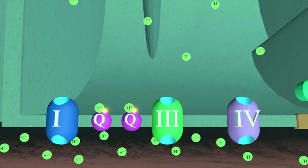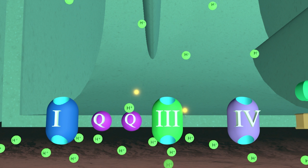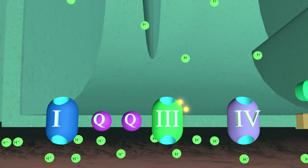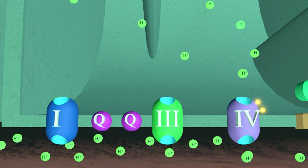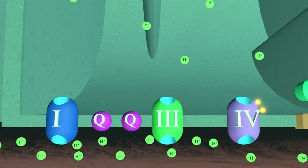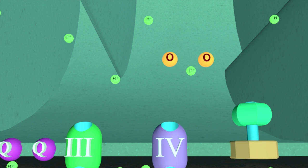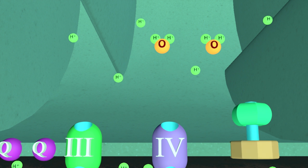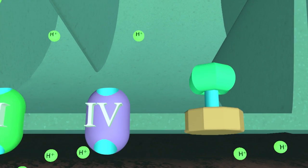The two electrons are then transferred to Complex 3, which powers the transport of those two hydrogen ions into the intermediate space. After this occurs, the two electrons are then transferred to Complex 4, which drives the transport of four hydrogen ions into the intermediate space, after which the two electrons are then transferred to two oxygen molecules, which combine with four hydrogen ions to form two water molecules, thus completing the transfer of electrons from one NADH to two oxygen molecules.